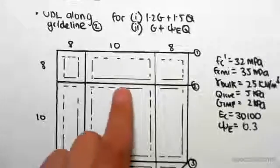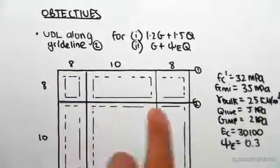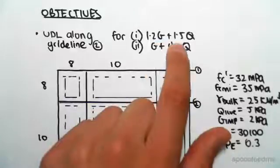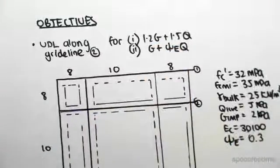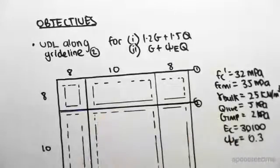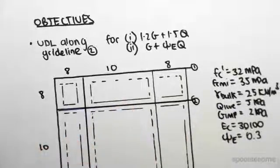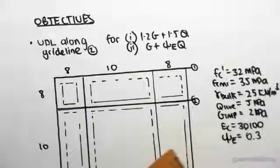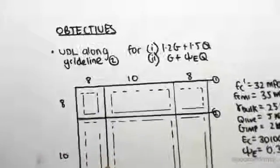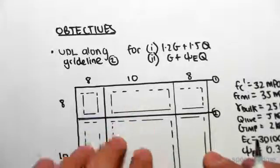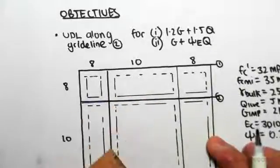As I said, we're going to be looking at the UDL along grid line 2, and we're going to be doing 1.2G plus 1.5Q first. What we do is split it up into the floor loading and the beam loading. There's specific loading from the floor, from the slab, and there's the self-weight of the beam. We have to look at those two components. For the slab loading, we need to look at how this slab load distributes from the slab into the beams.